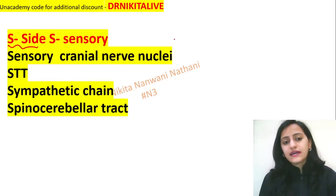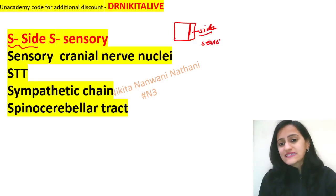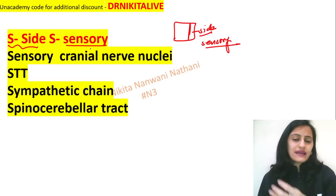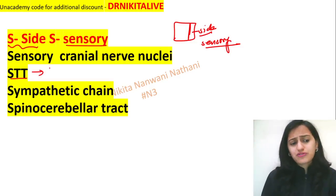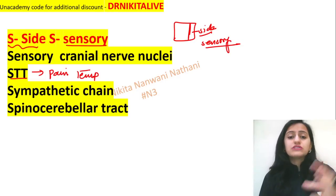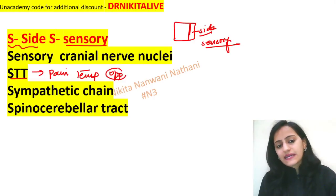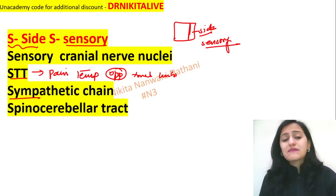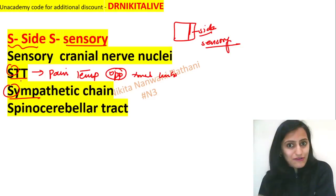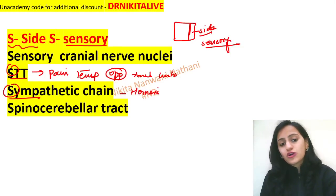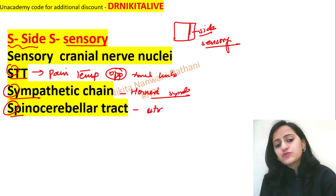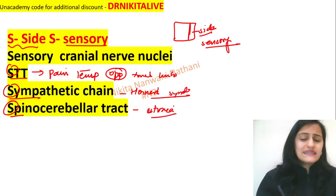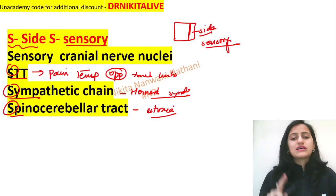For lateral brainstem syndromes: S for side, S for sensory. The sensory cranial nerve nuclei — CN5, 7, 8, 9, 10, and 11 — will be affected. The spinothalamic tract, which carries pain and temperature from the trunk and limbs of the opposite side, is affected. S also stands for the sympathetic chain — its involvement causes Horner's syndrome. And the spinocerebellar tract is affected, leading to ataxia. So sensory cranial nerve nuclei, spinothalamic tract, sympathetic chain, and spinocerebellar tract are all affected in lateral brainstem syndromes.